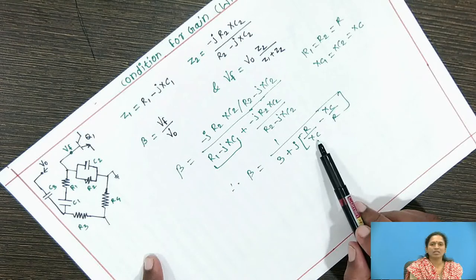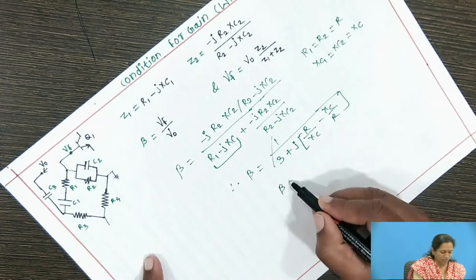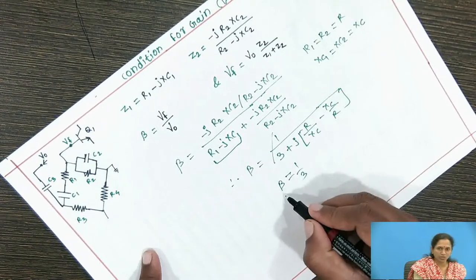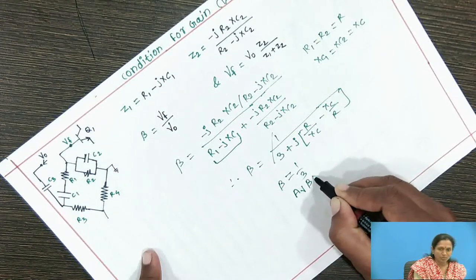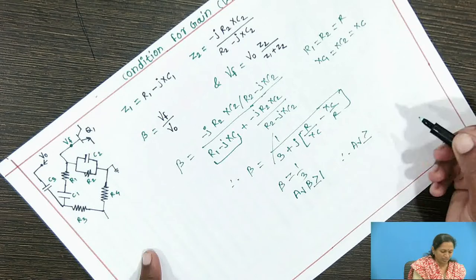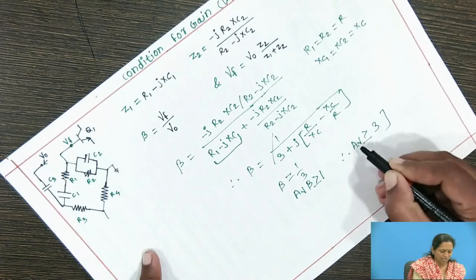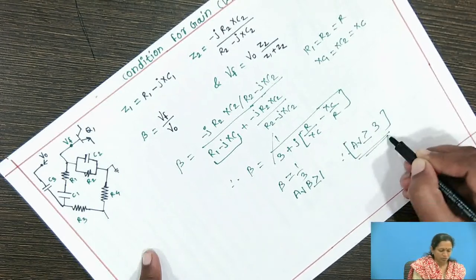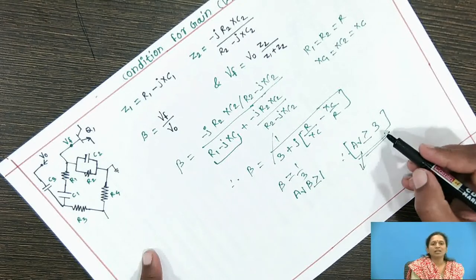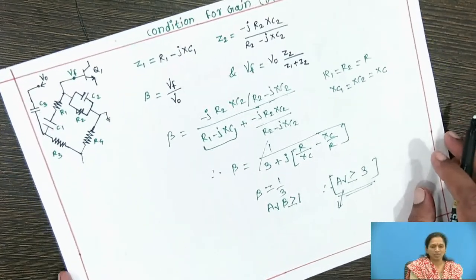Considering the real part, you get beta equal to 1/3. The condition for sustained oscillation is that Av·β must be greater than or equal to 1. So Av should be greater than or equal to 1/β, which is 3. We can say that when the voltage gain of the two stages of amplifier is greater than 3, sustained oscillations can be obtained. This is the condition for gain for the Wien Bridge Oscillator circuit.